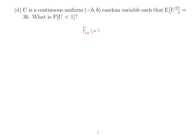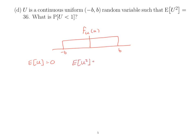In this case, if the PDF of U is constant from -B to B, we know because it's symmetric that E[U] = 0. That tells us that the second moment equals the variance. We use the same formula: (B - (-B))²/12 = 4B²/12. And we're told that equals 36.